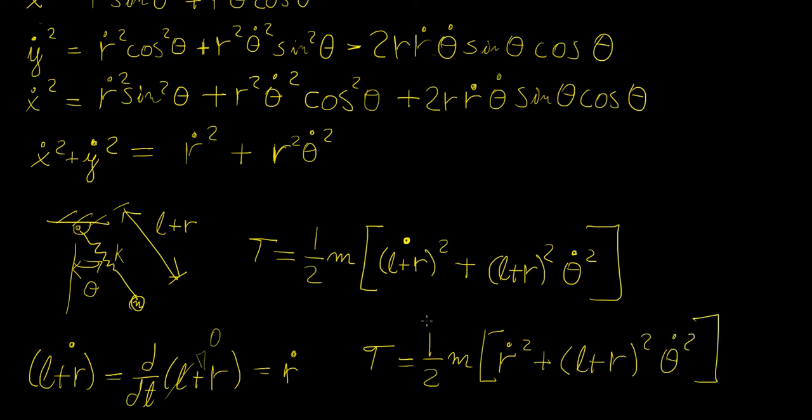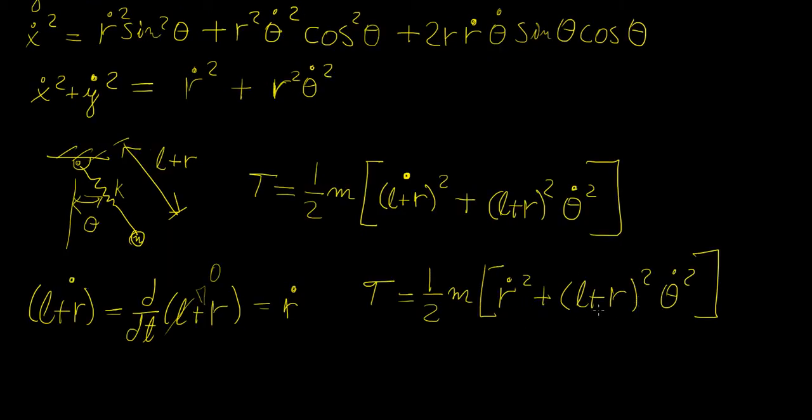And if you recall, what we obtained in the last video for the kinetic energy term was exactly this, but we obtained it in expanded form. So basically if we expand this side, we should get the original expression. So we're going to have half of m, and then we have r dot squared, plus l squared theta dot squared, plus 2lr theta dot squared, and then plus r squared theta dot squared.